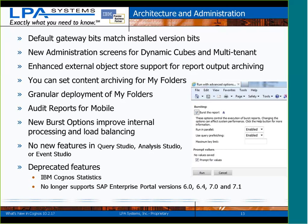When you do report bursting, the screenshot here shows that when you go and set your bursting options, you can now specify: run in parallel, query pre-fetching of data, and the maximum number of keys you're willing to process. You can control whether reports burst across multiple servers — in other words, run in parallel across multiple servers. By default, it's on.